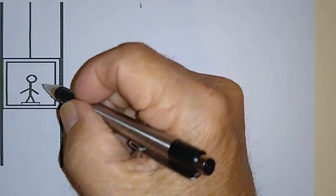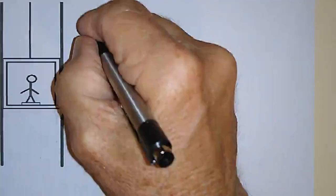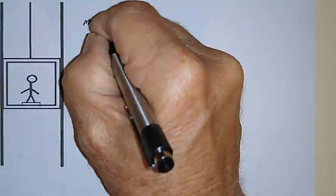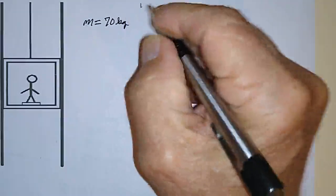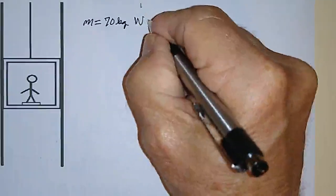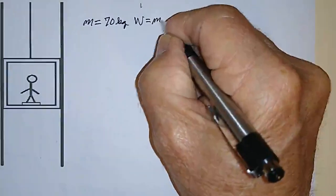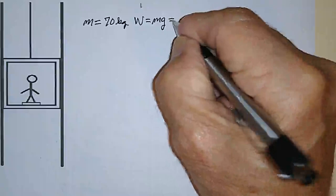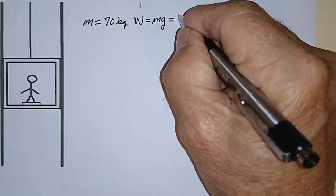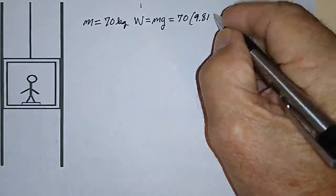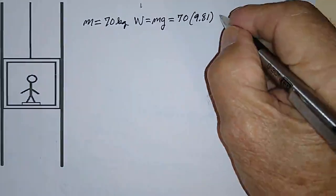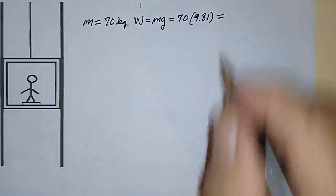Let's say we have a guy in an elevator and let's say his mass is equal to 70 kilograms, so that he has a weight which is equal to mg, is equal to 70 times 9.81 meters per second squared, and that is approximately equal to...